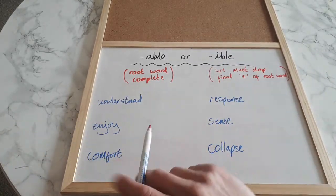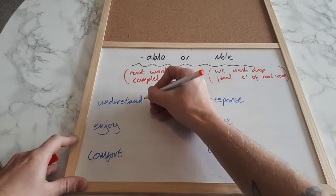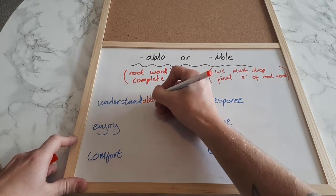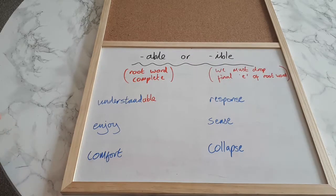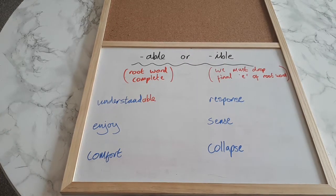So for example, if we understand something it is understandable. We are able to understand it. That's what that -able ending means. So it's understandable.